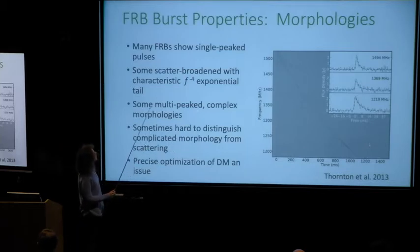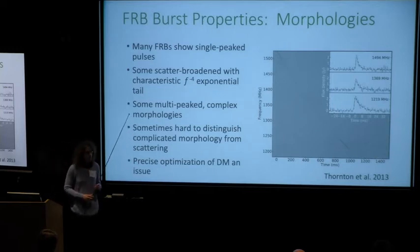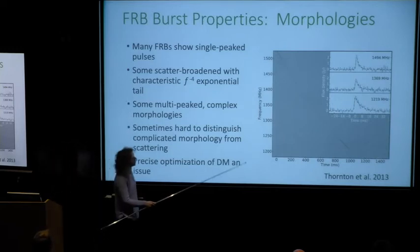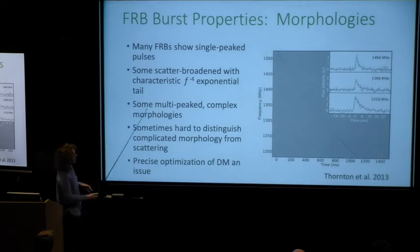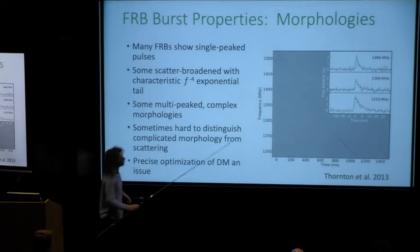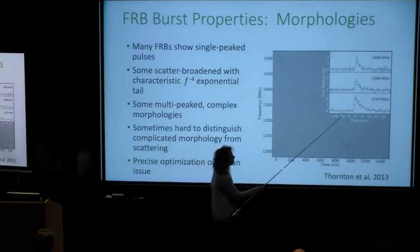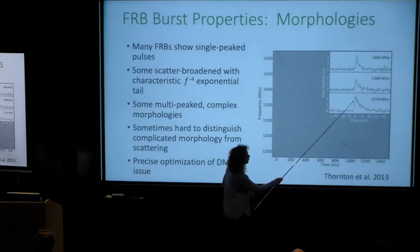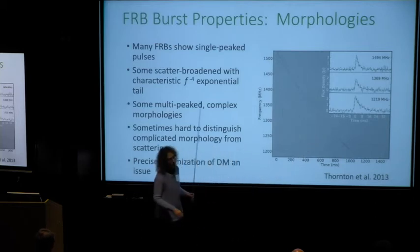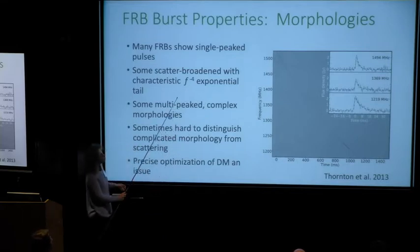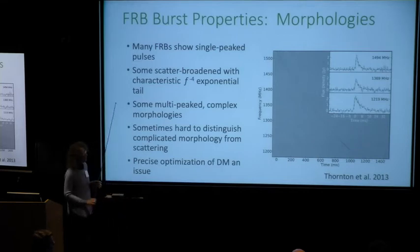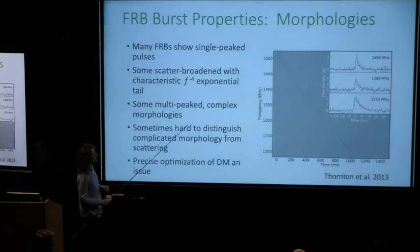Most FRBs show single-peaked pulses, like this one from Florentin et al. Some of them — and it's yet unclear what fraction — show scatter broadening. For those not familiar, this manifests as a frequency-dependent exponential convolved with a Gaussian, where the scattering time is proportional to frequency to roughly the minus-four power. It's not necessarily exactly four, but that's roughly it — a very strong frequency dependence.